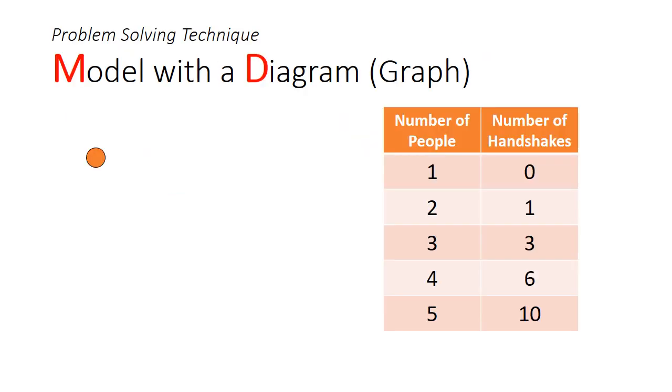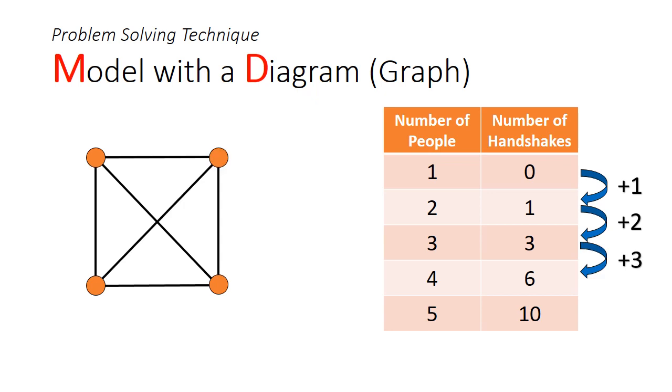We could try to model this problem with a special type of diagram known as a graph. I'm going to use an orange circle, also known as a vertex, to represent a person, and to use lines, also known as edges, to connect two people together and represent a handshake. We can see that if we add a third person, he contributes two handshakes, a fourth person contributes three handshakes, and so on. By using a table to list the number of people against handshakes, we can quickly spot a pattern.